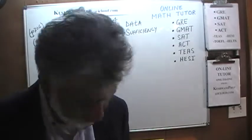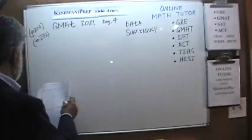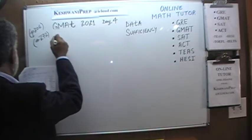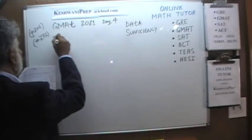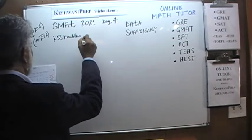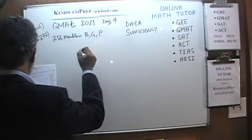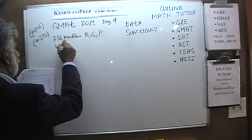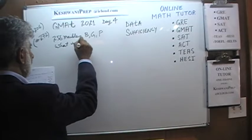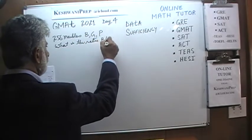Let's look at number 272. We are told that we have 256 marbles. They are either blue, green, or purple. The question is: what is the ratio of blue to purple?